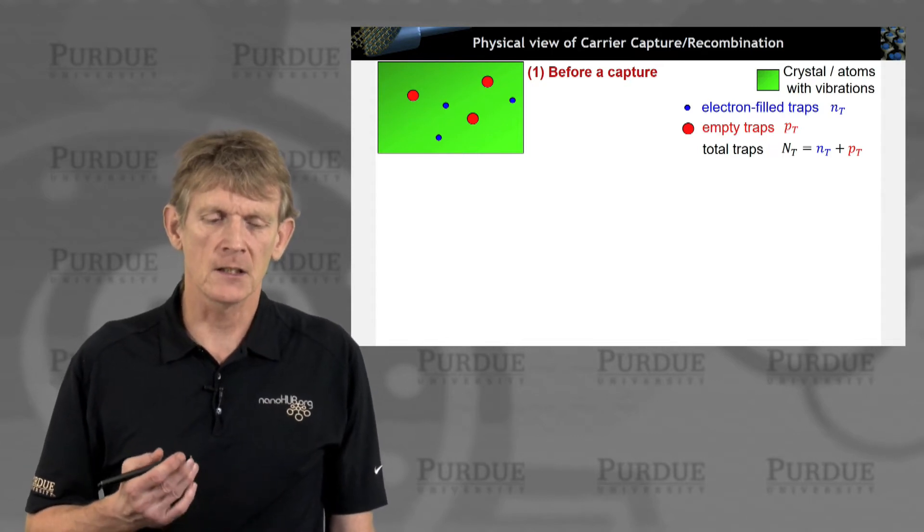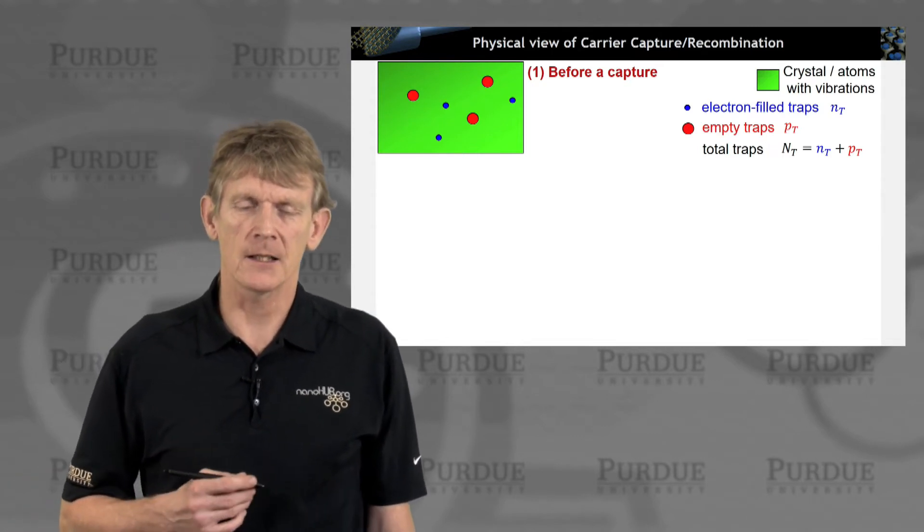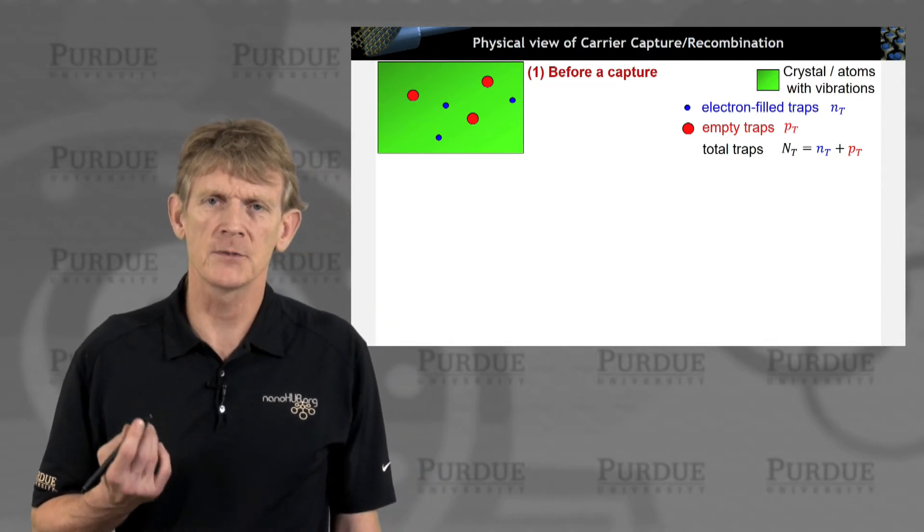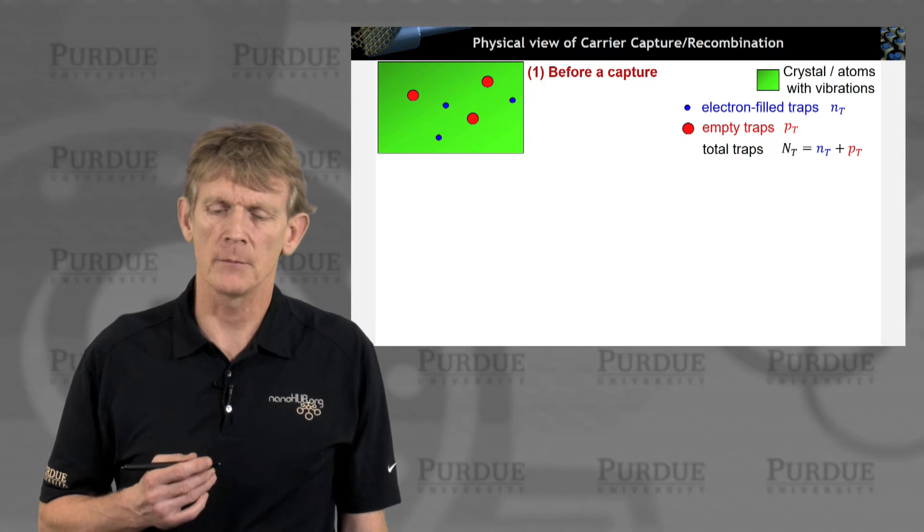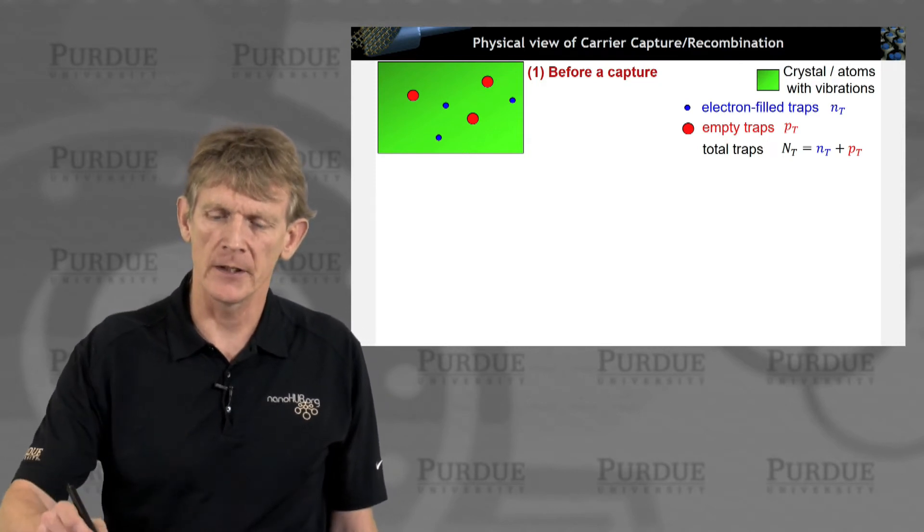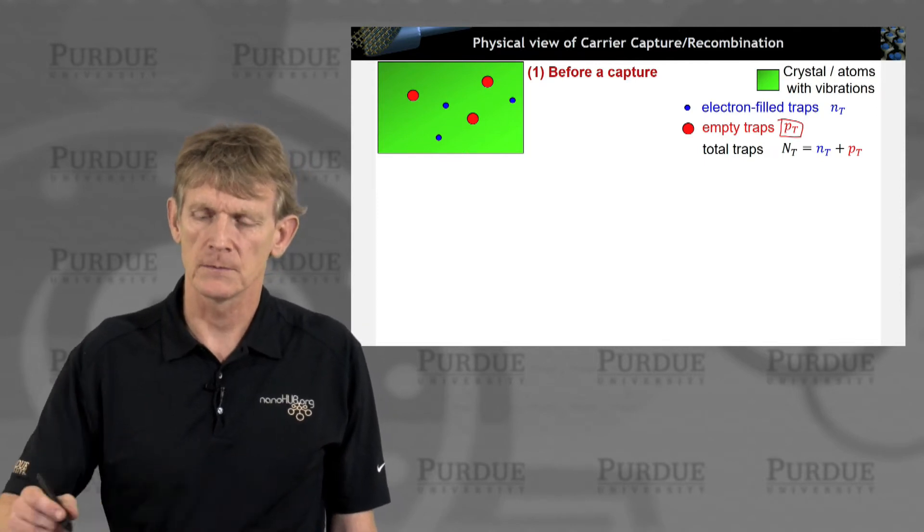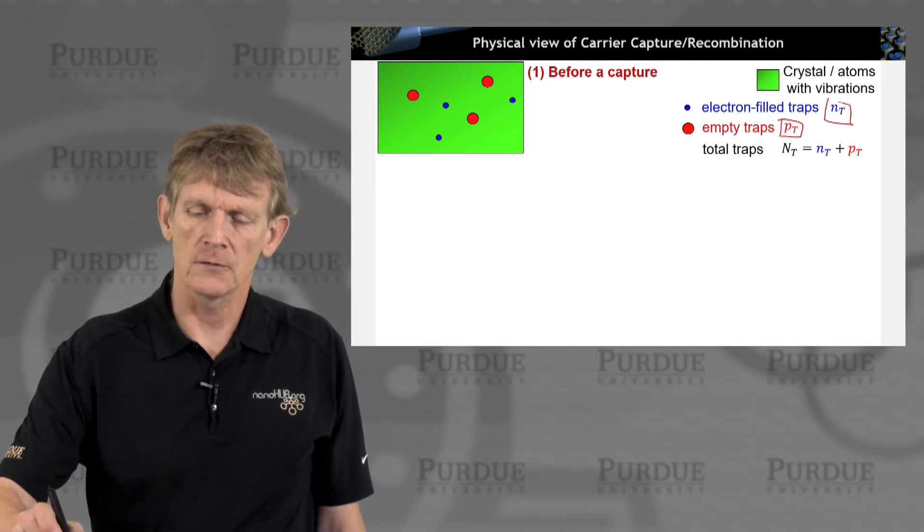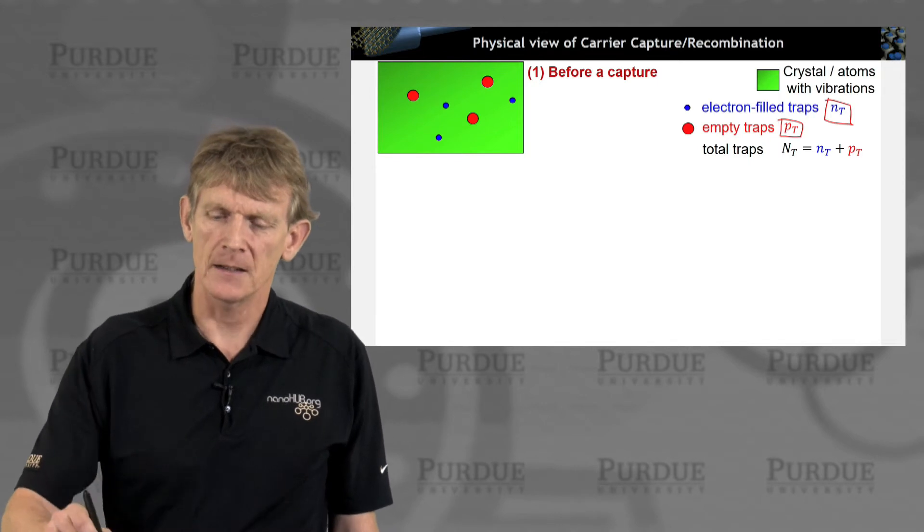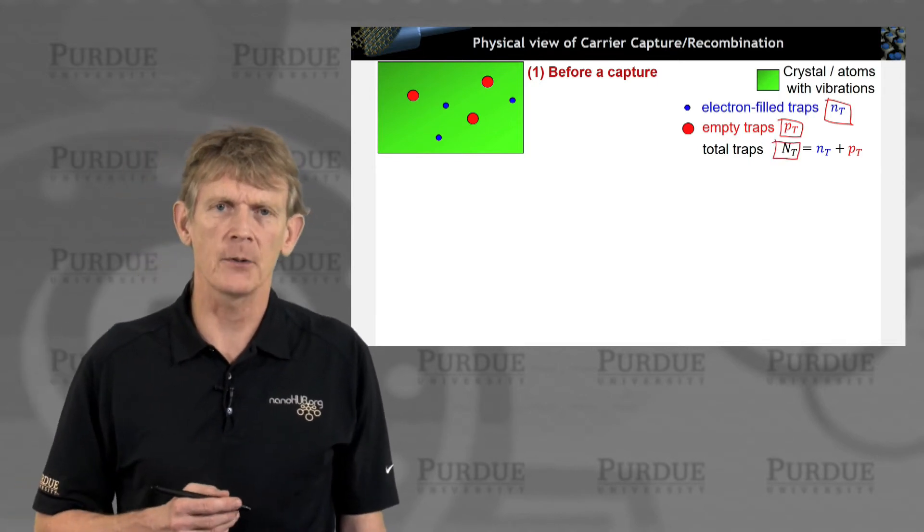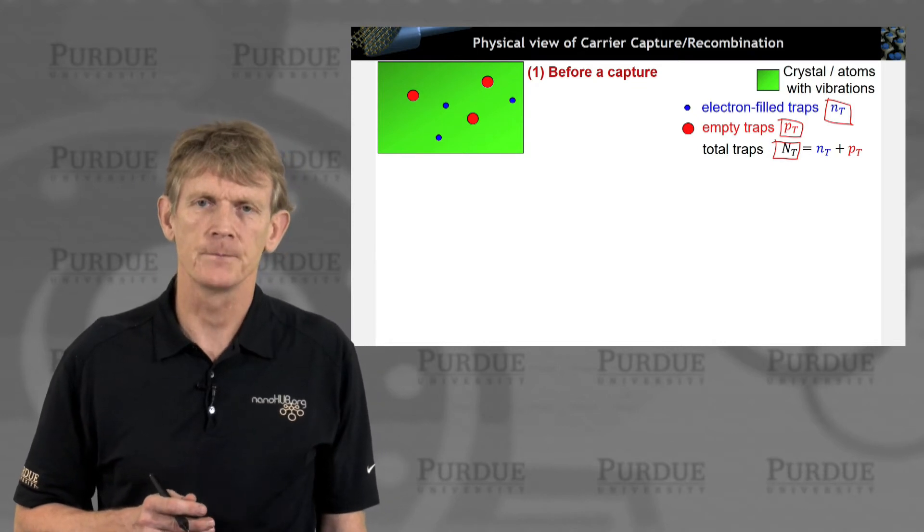Now, let's consider the system. We have three electron-filled traps and three hole traps, empty traps. So we'll call about empty traps, we label that PT, or traps with holes, hole traps. And we have electron-filled traps, NT. They sum up to a total number of traps. So in this pictorial example here, we have 3 plus 3.